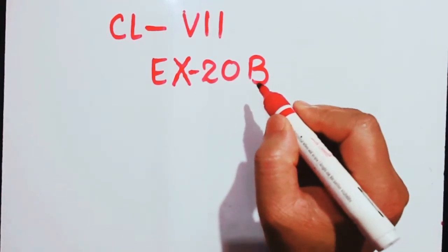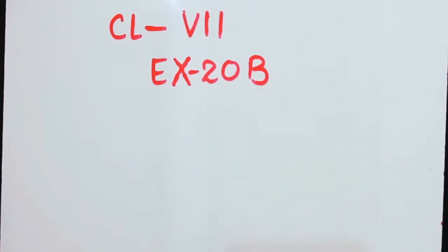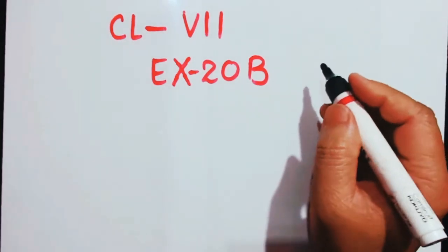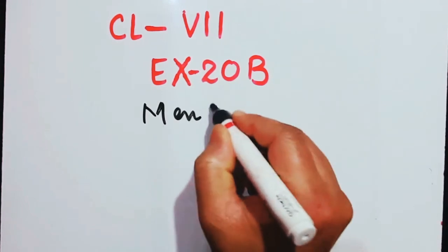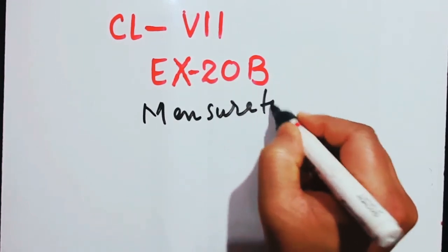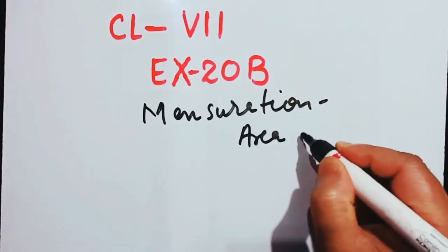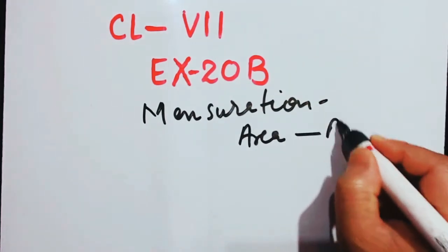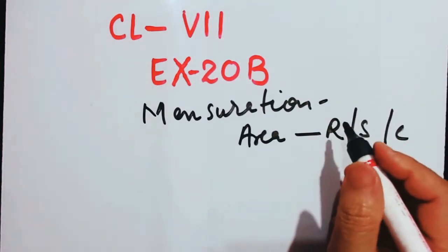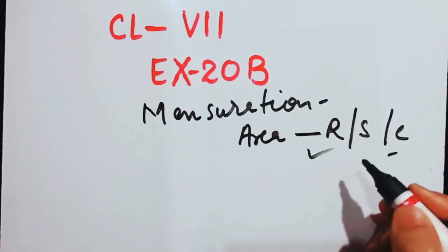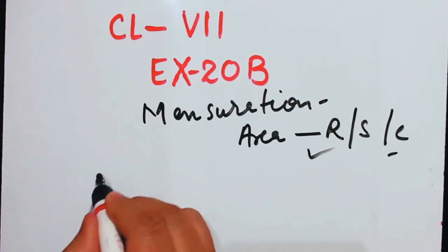Hello everybody, we are in exercise 20b. I hope you are enjoying doing the sums. Once again we are dealing with mensuration — area of a rectangle, area of a square, area of a circle. We had already dealt with area of a rectangle in our previous few sums. Now let's start from number six.